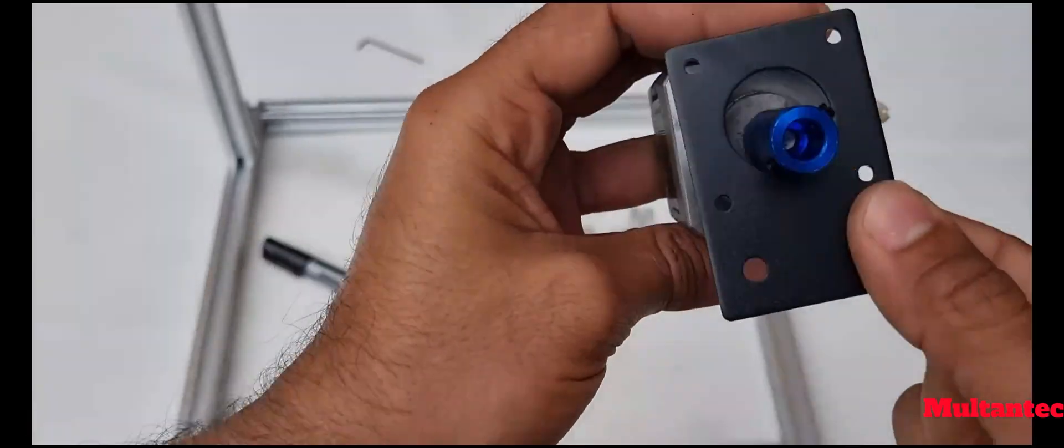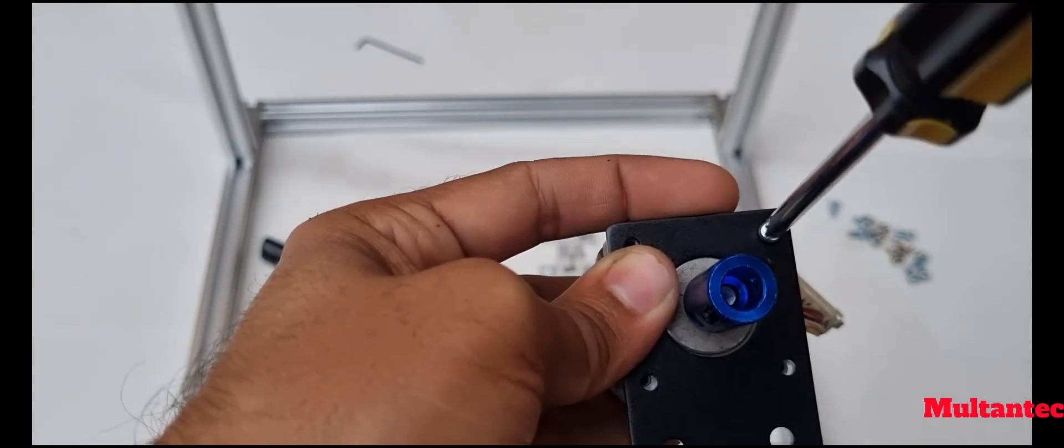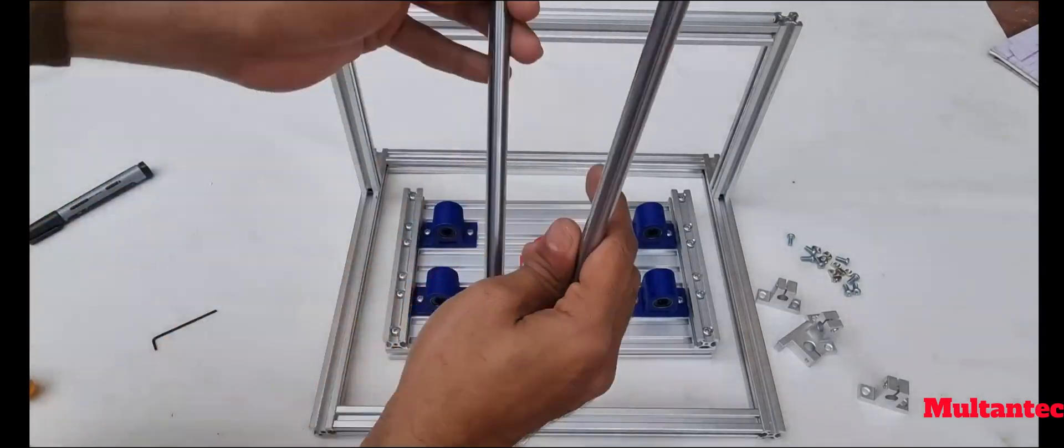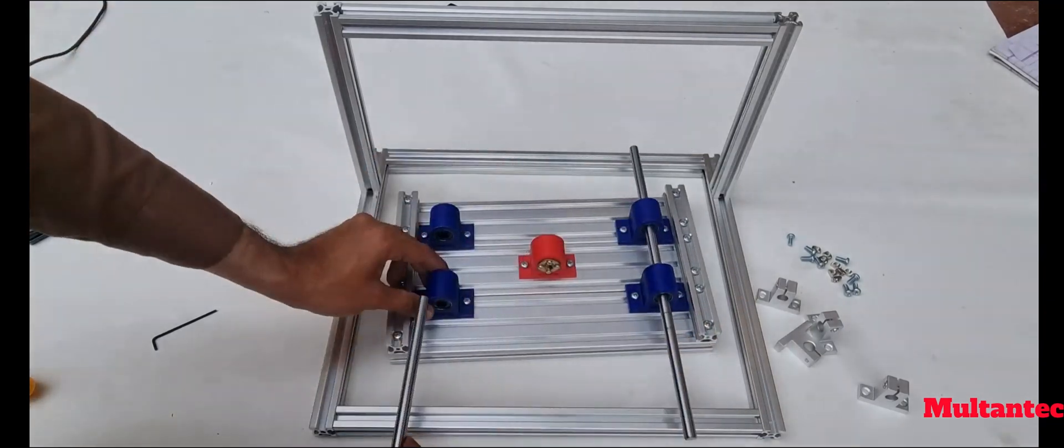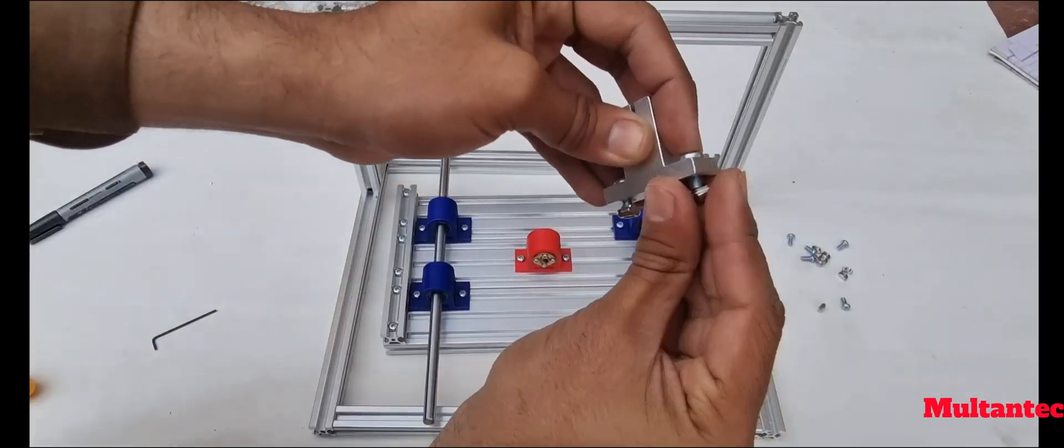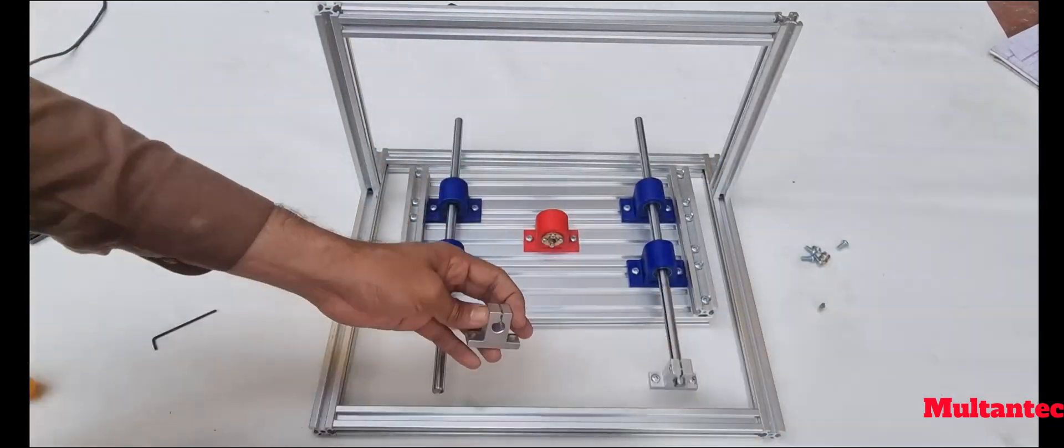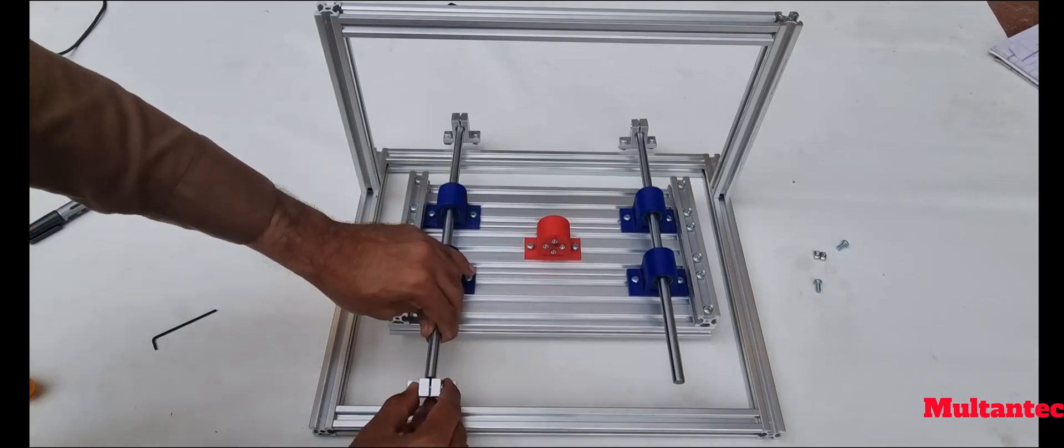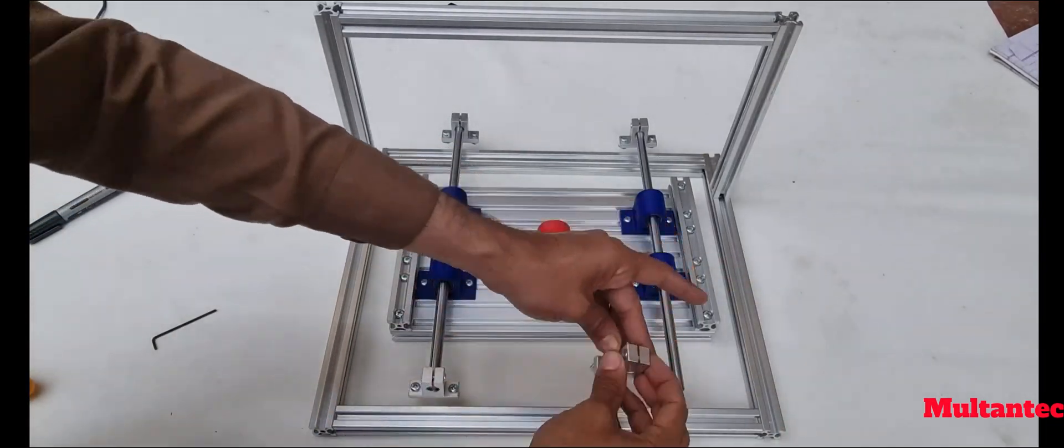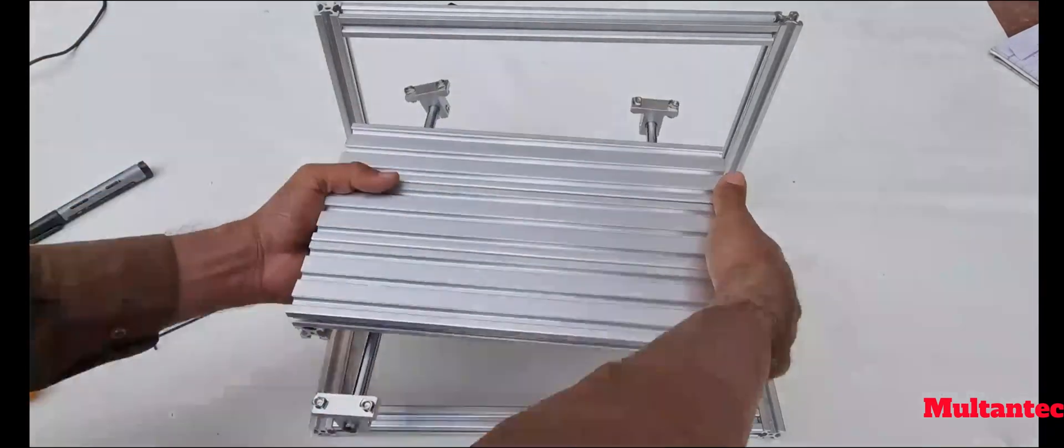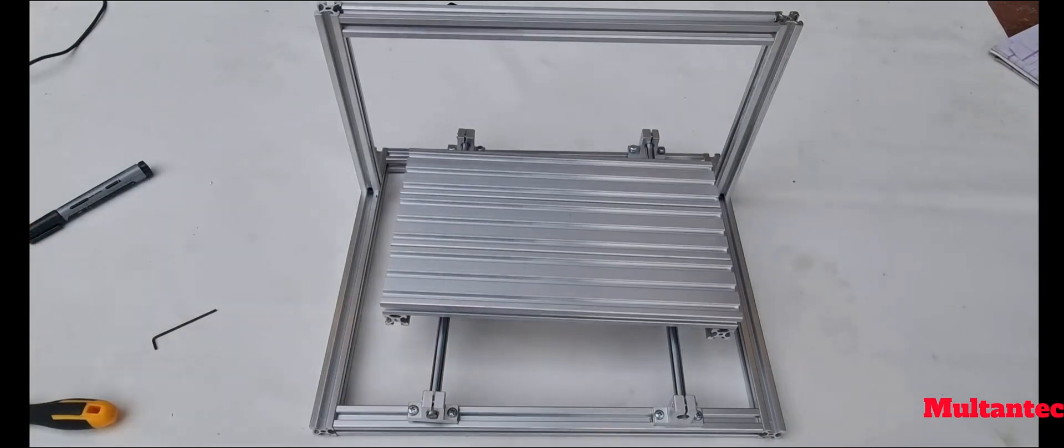Mount the NEMA 17 motor plate with M3 8mm screws along with coupler for Y-axis. Now insert 10mm rods of length 330mm in Y-axis and then mount the SK10 end bracket on each end of the rod. Use M5 10mm screws with M5 hammer drop T nuts. Flip the bed and adjust the SK10 brackets on frame so that all the nuts fits inside the frame slots.